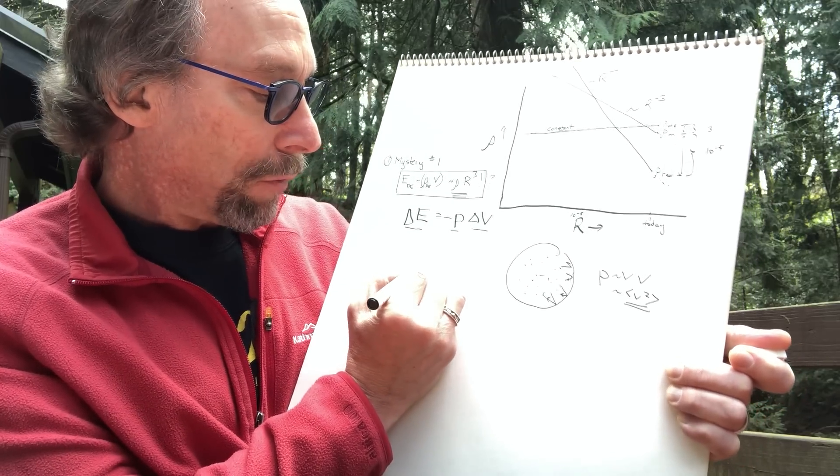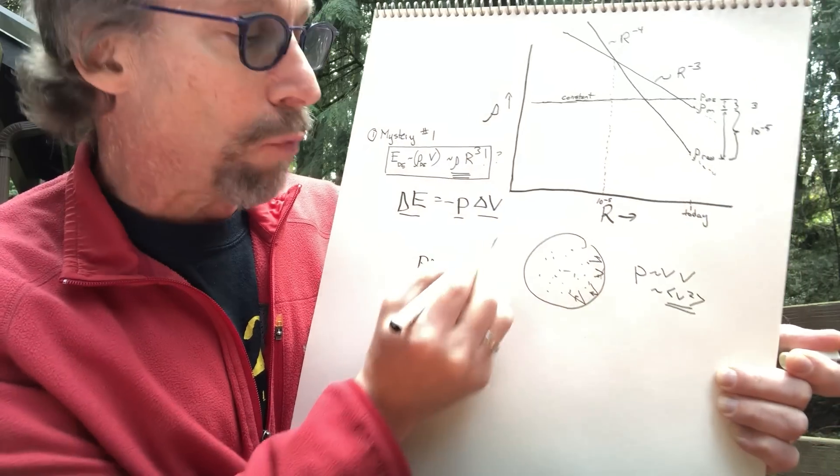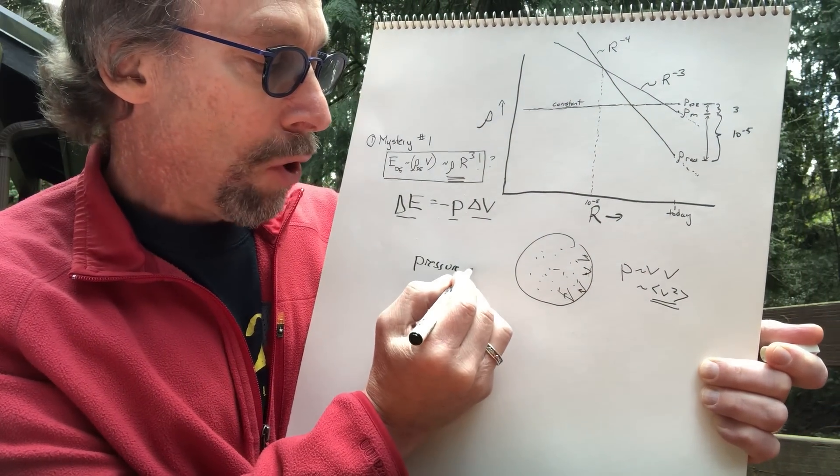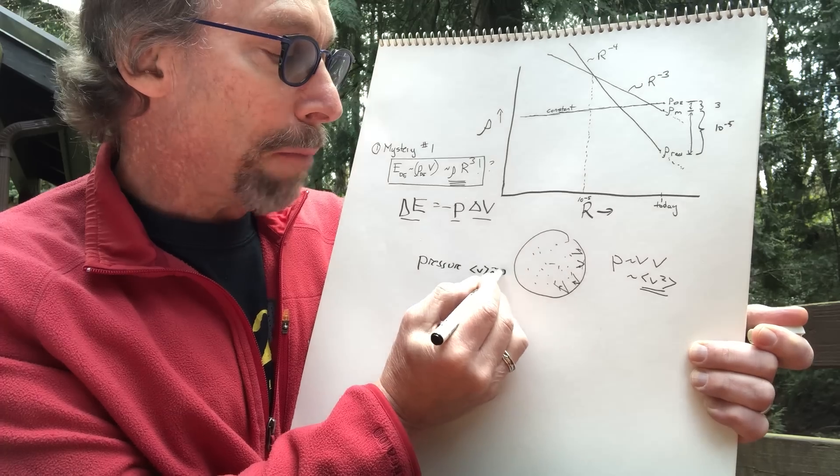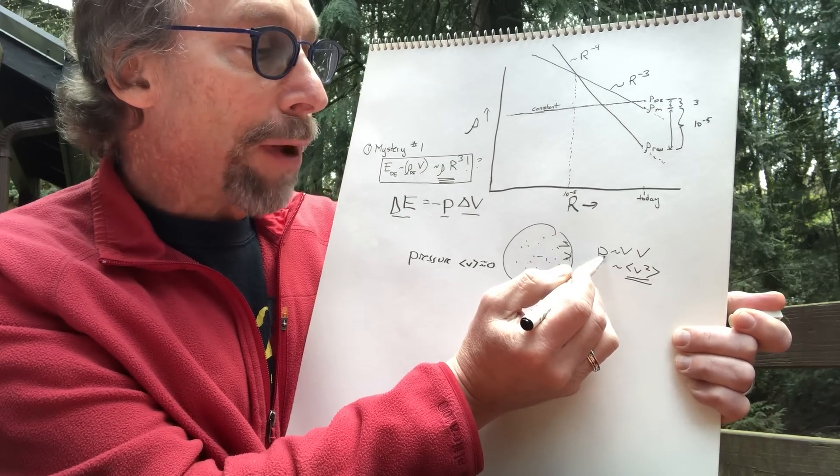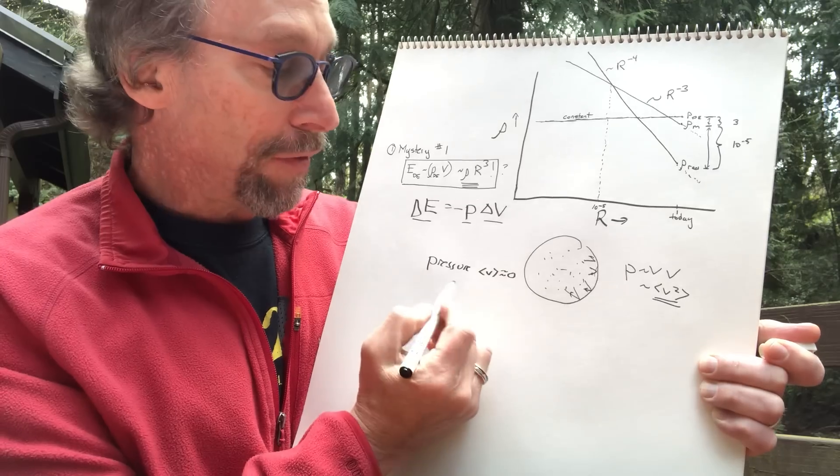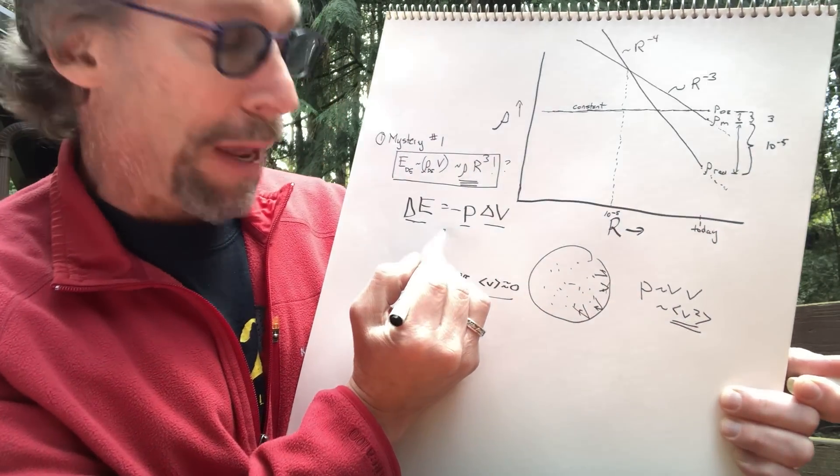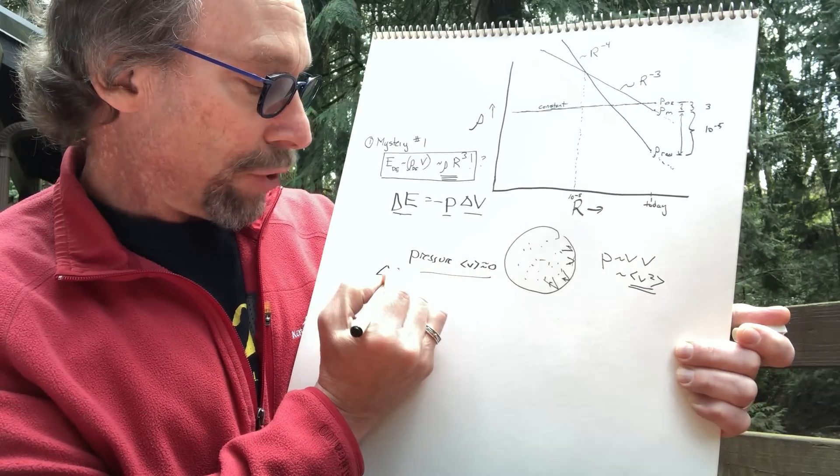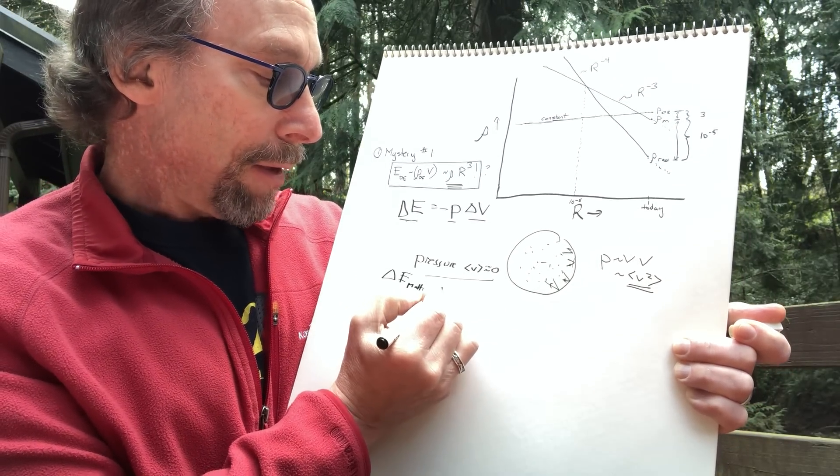what is the pressure due to just matter that's just sitting around, like galaxies that are at rest, more or less, in the expansion? Well, their average velocity is about zero. They're not moving. That means their pressure that they're exerting on the expanding universe is roughly zero. And that means they're not doing any work on the expanding universe.